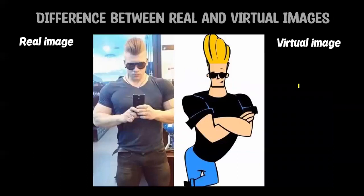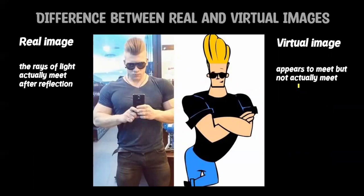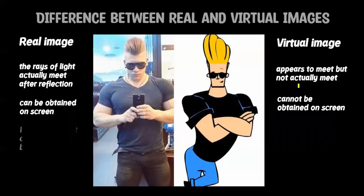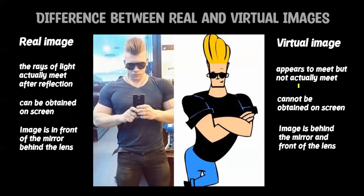Do you know the difference between real and virtual images? A real image is one where rays of light actually meet after reflection, while a virtual image appears to meet but does not actually meet. A real image can be obtained on a screen, while a virtual image cannot. A real image is formed in front of the mirror or behind the lens, while a virtual image is formed behind the mirror or in front of the lens. Real images are generally inverted, while virtual images are generally erect.